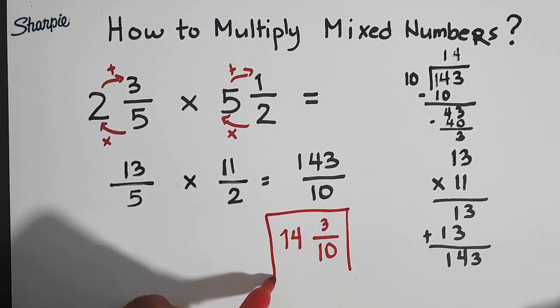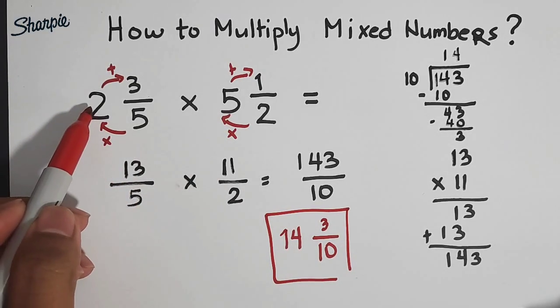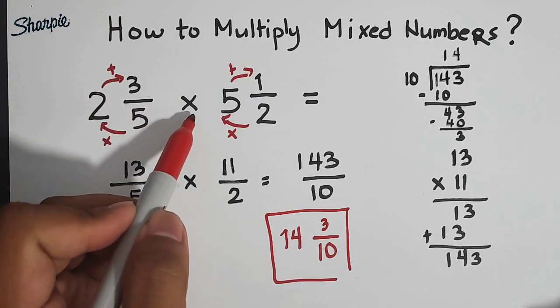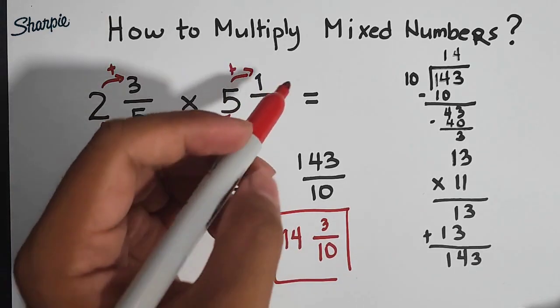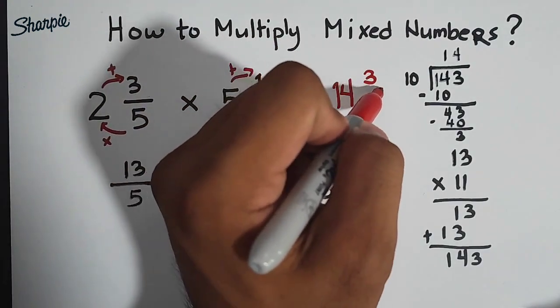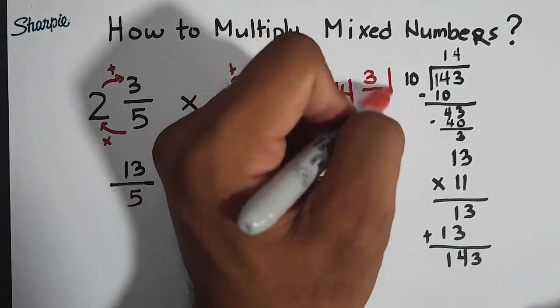So the value or the answer here, when we multiply 2 and 3 over 5 by 5 and 1 half, is none other than 14 and 3 over 10. So this is our answer.